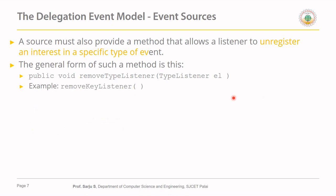We already discussed how to register a listener to the source using addTypeListener. If you want to remove an already registered listener from a source, you can use the removeTypeListener method. For example, if you added a key listener using addKeyListener, you can remove it using removeKeyListener. The 'type' specifies the type of listener already registered with the source.